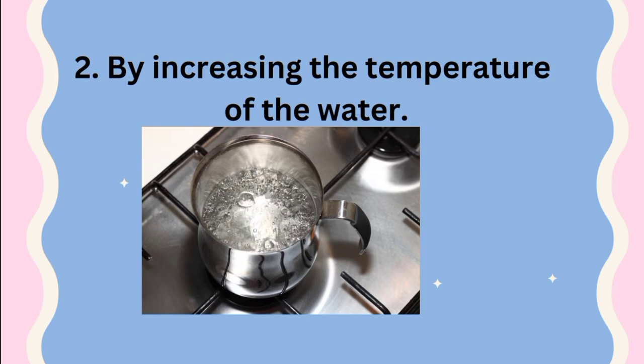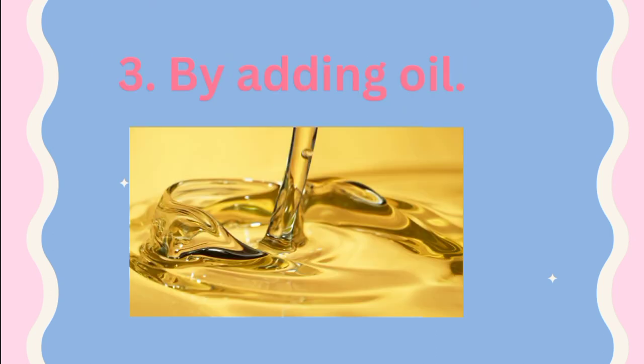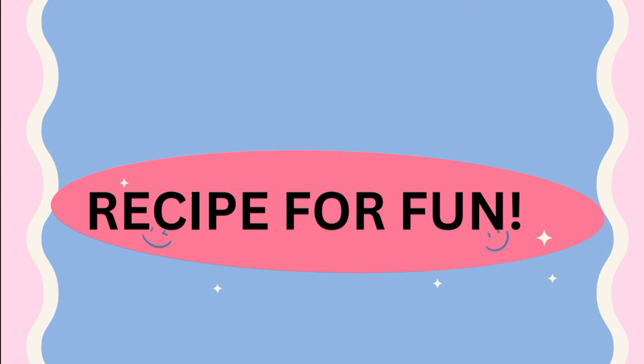Also by increasing the temperature of the water — how do you increase the temperature of water? By boiling the water. So when you increase the temperature of water, you are reducing surface tension. Thirdly, by adding oil to the water — add oil to the water and you reduce surface tension.